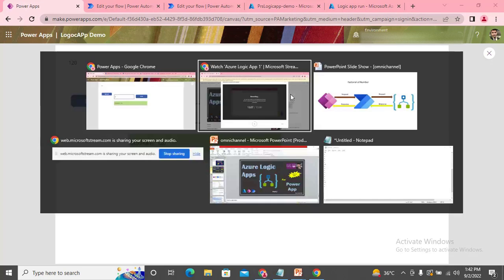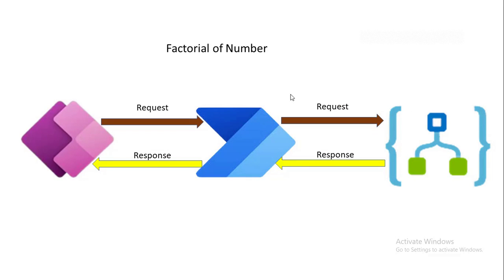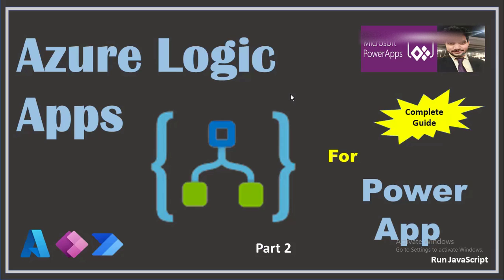Let's try with five — it gives us output as 120, and the factorial of five is 120. So that is the complete flow: we sent input from Power App to Power Automate, from Power Automate we sent the number to Azure Logic App, in Logic App we executed JavaScript and got the response back to Power Automate, then back to Power App. The designer in Azure Logic App is similar to Power Automate, but there are additional features like inline JavaScript execution that Power Automate currently doesn't have.